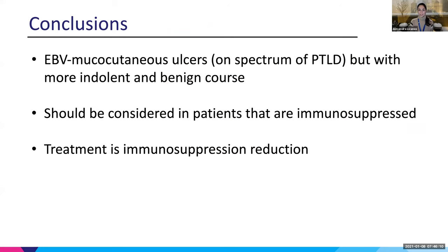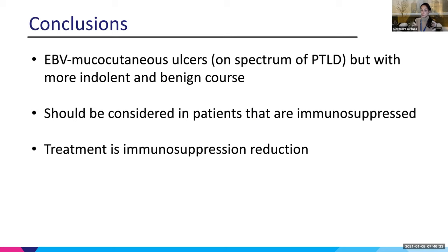To conclude: EBV mucocutaneous ulcers are on the spectrum of PTLD, but with a more indolent and benign course. It should be considered in patients who are immunosuppressed and have this esophageal ulcer, and treatment is immunosuppression reduction — the prognosis is good. That's all I've got for you. Thank you.